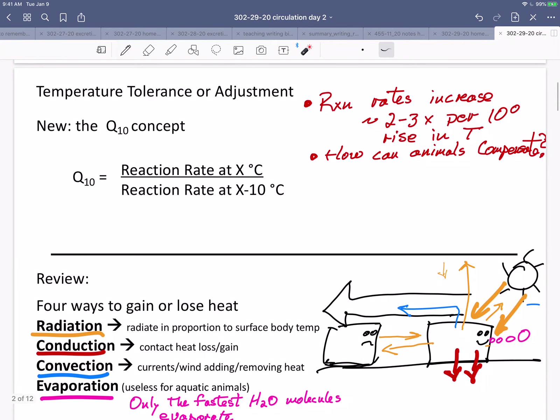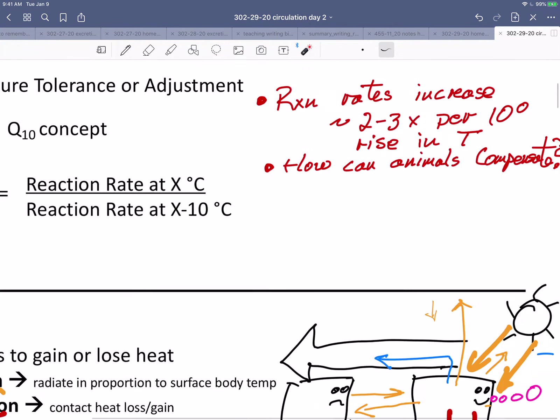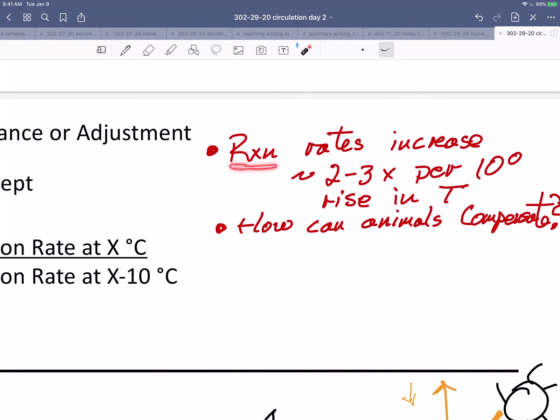So how do animals tolerate or adjust things in response to temperature? Well, reaction rates increase about two to three times per 10 degree rise in temperature over the range in which animals live. So reaction rates go twice as fast.